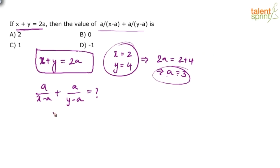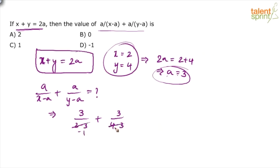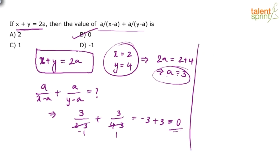So substituting: a/(x−a) + a/(y−a) = 3/(2−3) + 3/(4−3) = 3/(−1) + 3/1 = −3 + 3 = 0. The terms cancel and we are left with zero. Option B is your answer.